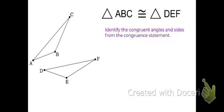Here we're told that triangle ABC is congruent to triangle DEF. This is a congruence statement, and we can use this statement to identify congruent angles and sides.